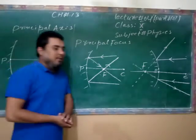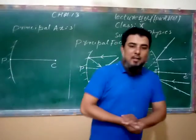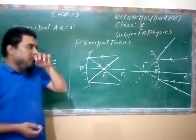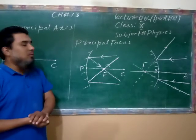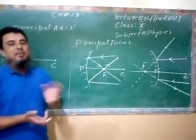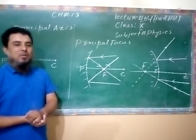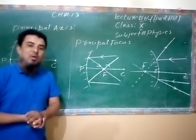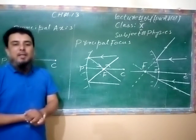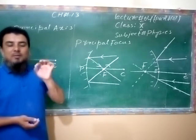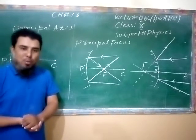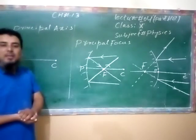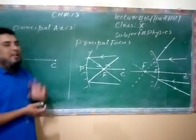Welcome to Oxygen Grammar School. This is Lecture Number 4, Part 1. In Lecture Number 3, we discussed the center of curvature of a curved mirror. A curved mirror includes both a concave mirror and a convex mirror. The pole is the center point of the mirror, and the radius of curvature is the distance from the pole to the center of curvature.